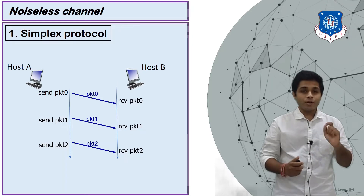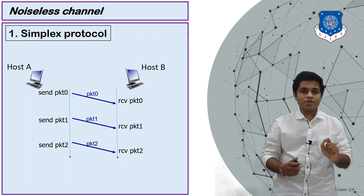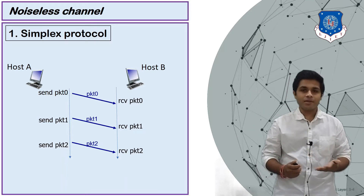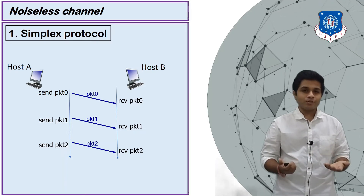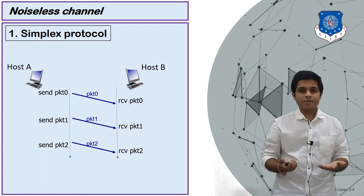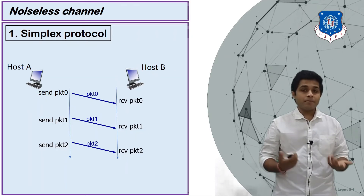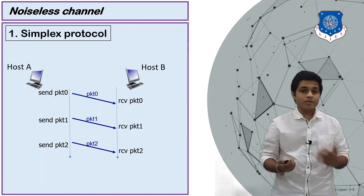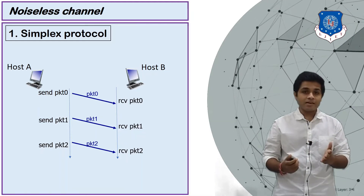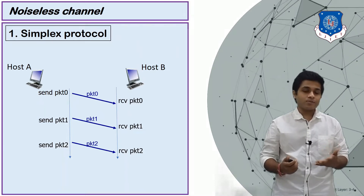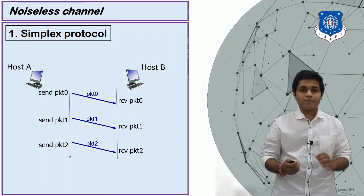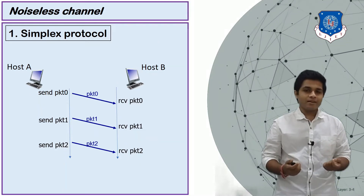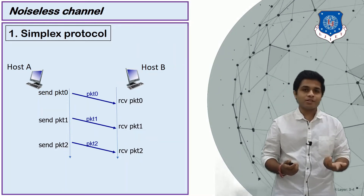For the whole time, A is assuming that whatever data it sends is received by B, but that is not true. There is a possibility that B might be busy or unable to receive some packets. In that case, B is not able to inform the sender that it has not received a packet, so whatever packet is lost is simply lost at device B. This is considered the major drawback of the simplex protocol.